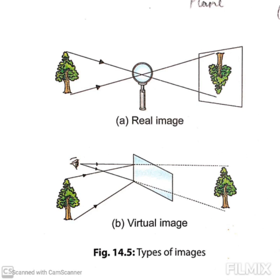Real images are always inverted and their size may be the same, smaller, or bigger than the object. Virtual images are formed when the rays of light reflected from a smooth surface appear to meet at a certain point but do not actually meet on a screen. The image formed in this case is known as a virtual image. Virtual images cannot be obtained on a screen, they are always erect, and their size may be the same, smaller, or bigger than the object.